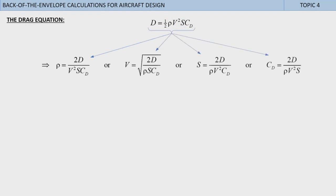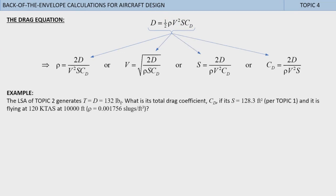Topic 4: The drag equation. Here, let's consider the drag equation in a fashion similar to the lift equation. The drag equation states that the drag force D equals 1/2 ρ times V squared times reference area S times the drag coefficient CD. As shown here, it too can be split into 4 additional equations. Let's look at an example involving the determination of the total drag coefficient. The LSA of topic 2 generates thrust, which is equal to drag, of 132 pounds. What is its total drag coefficient CD if its S equals 128.3 feet squared per topic 1, and is flying at 120 kTAS at 10,000 feet, where density equals 0.00175 slugs per cubic foot?